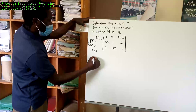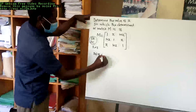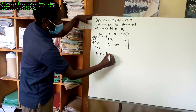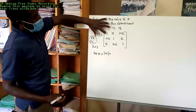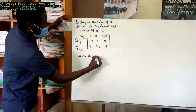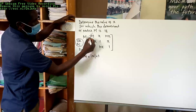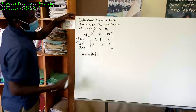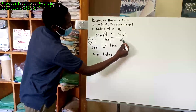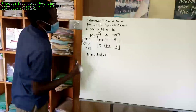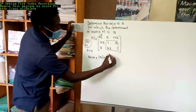We get the determinant of M, which is sometimes written as vertical bars with M in the center. Take this first element here, which is 1. Cover the row in which it sits and cover this column here. You will remain with a new matrix, which is a 2 by 2. So you write this 2 by 2 matrix in vertical bars.